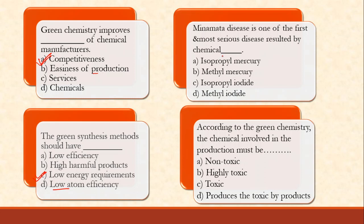Minamata disease is one of the first and most serious diseases resulted by chemical contamination. It happened around 1956 — people were eating fish, the water in the bay was contaminated by chemicals, the fish got contaminated, and people who ate the fish developed neurological diseases. This was because of methyl mercury — that is Minamata disease.